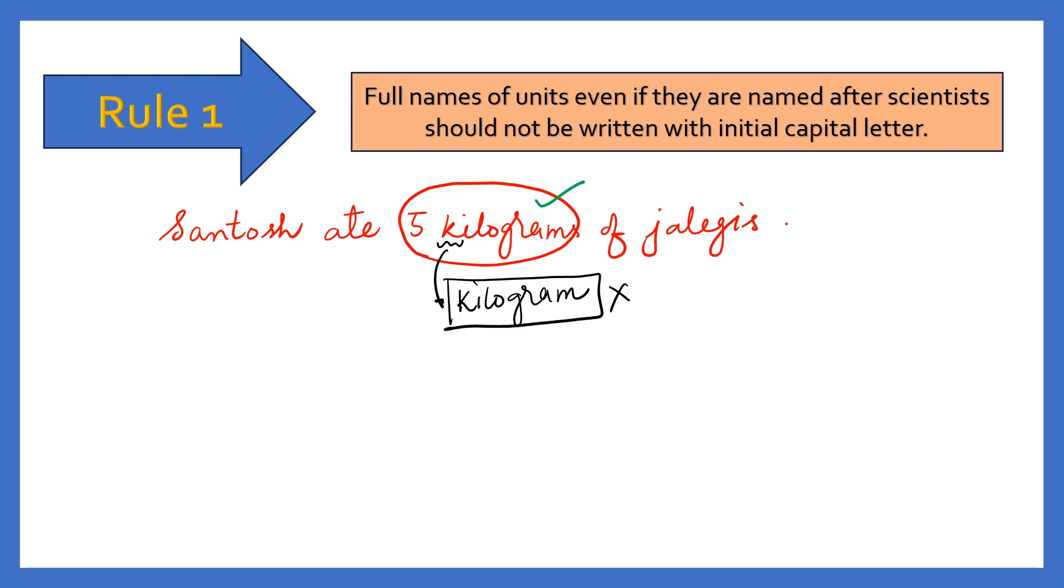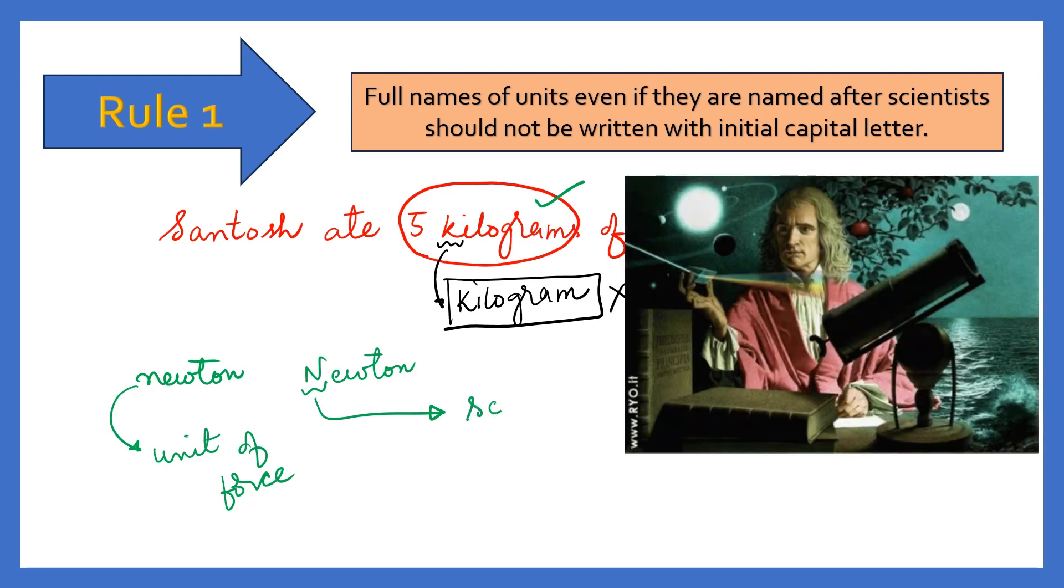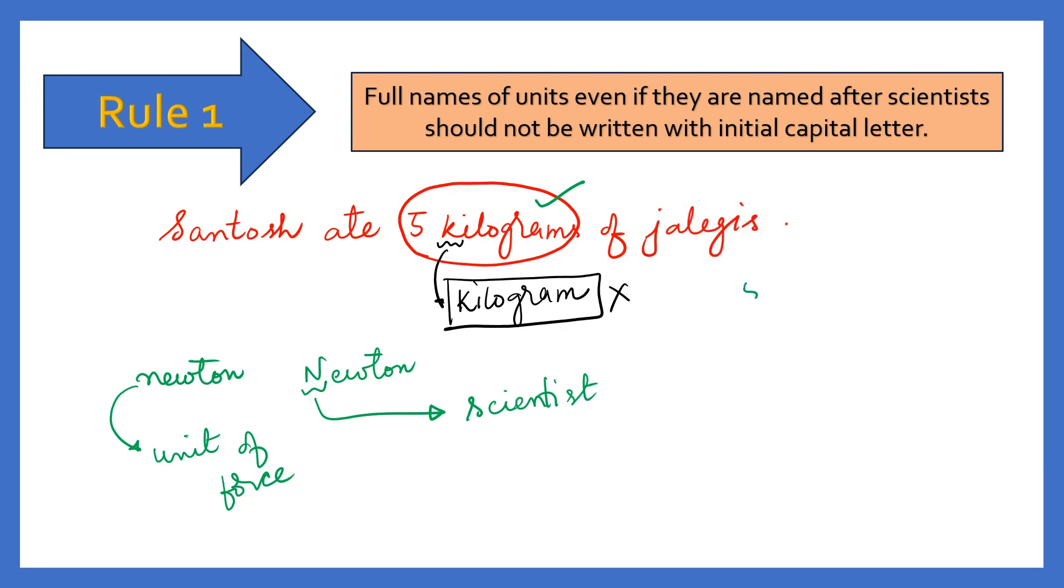Even if we are having the name of scientist, for example newton is a famous scientist. So what is the difference between these two newtons? Are they same? No. When I use this newton in a sentence, this represents unit of force. And if I write this Newton with capital N, it represents the scientist Sir Isaac Newton himself.